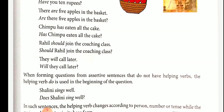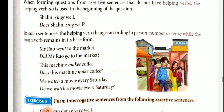More examples: Mr. Rao went to the market — the verb is past tense, so we use 'did.' Did Mr. Rao go to the market? Be careful — 'went' changes to 'go,' the base form. This machine makes coffee — 'makes' is singular, so: Does this machine make coffee? We watch a movie every Saturday — 'watch' is plural, so: Do we watch a movie every Saturday?